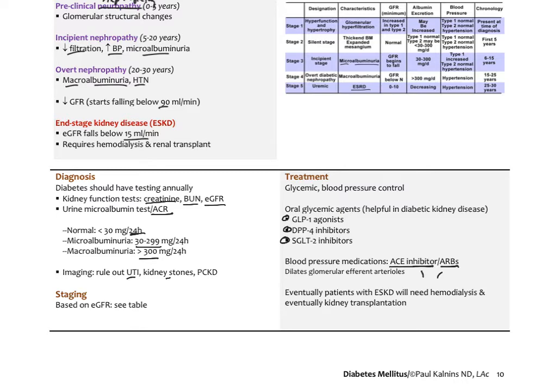You might see patients with normal blood pressure on a blood pressure medication — like a 5-milligram lisinopril — and wonder why. It's to protect their kidneys. Unfortunately, if uncontrolled sugar continues and kidney damage progresses, patients may end up with end-stage renal disease needing hemodialysis and possibly a kidney transplant. We want to make sure kidneys are being monitored and protected in our diabetic patients.